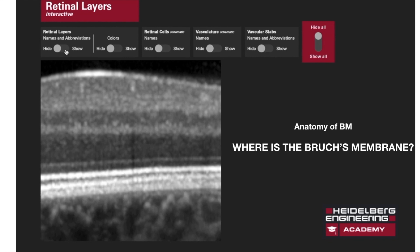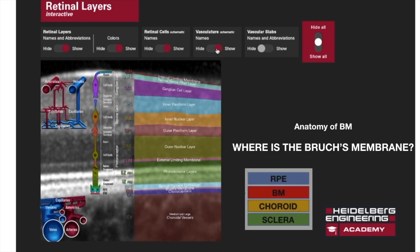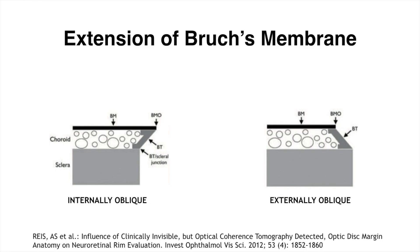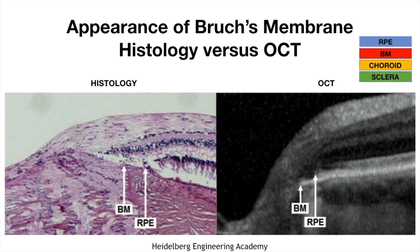Reorienting the anatomy of Bruch's membrane: Bruch's membrane lies between the retinal pigment epithelium and choroid — RPE lies on top of it, choroid lies below it. Bruch's membrane has two configurations: if Bruch's membrane extends beyond the Elsening border tissue, it is called internally oblique configuration; if the Elsening boundary tissue extends beyond Bruch's membrane, it is called externally oblique configuration.